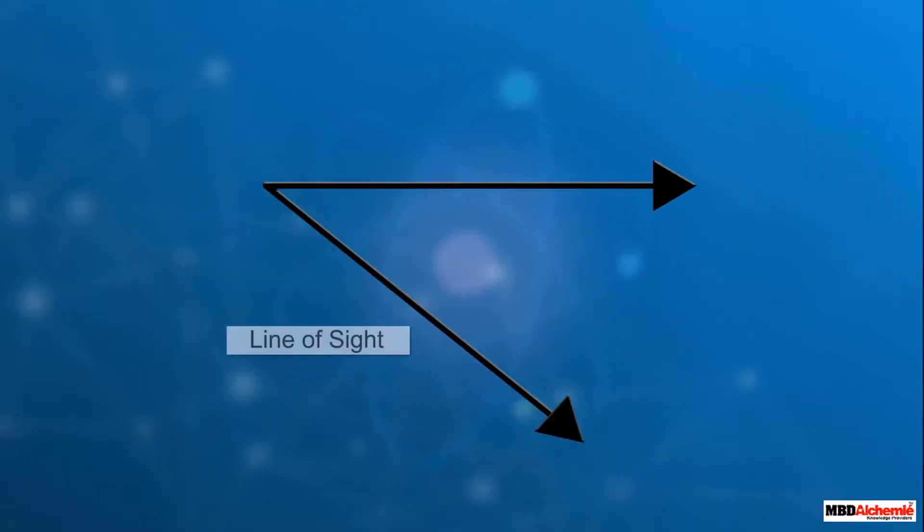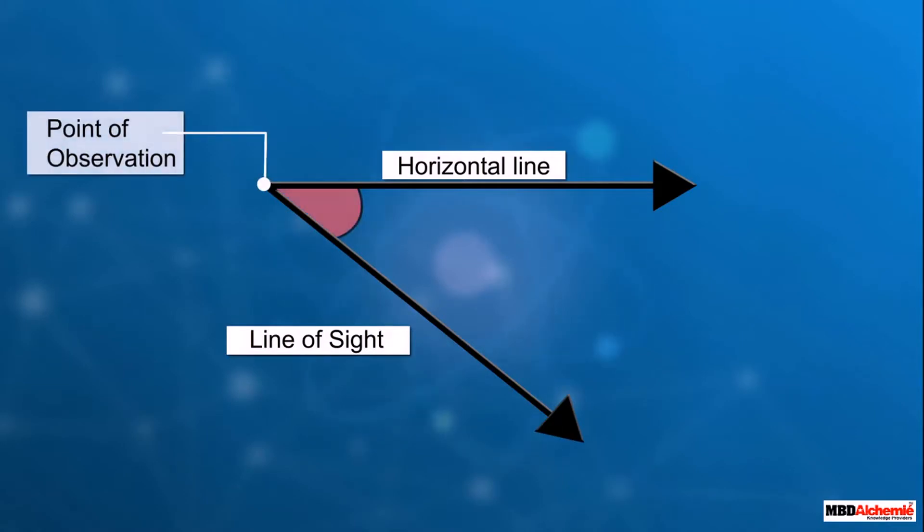When we look down, the line of sight moves below the horizontal line and makes an angle having vertex at the observation point. This angle is called the angle of depression.